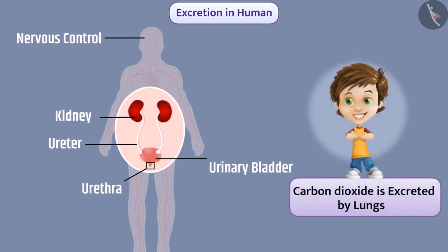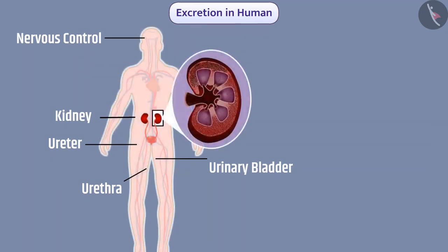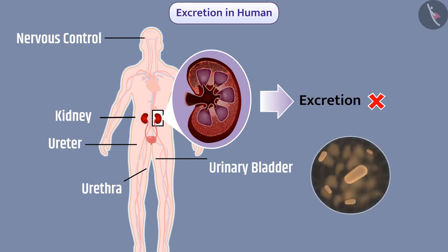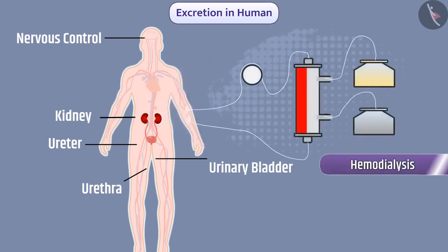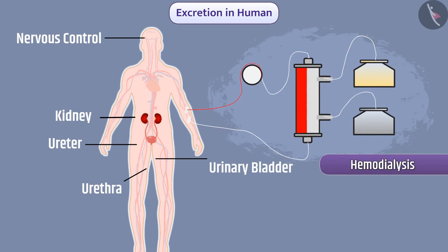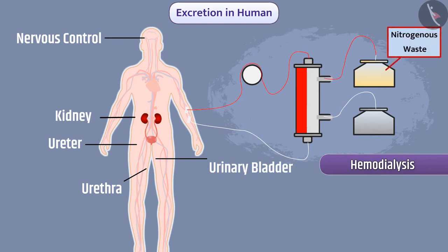Apart from this, carbon dioxide is excreted by the lungs and the skin excretes water and salts. If for any reason the kidneys stop working, excretion in the body does not happen properly and harmful waste starts accumulating in the body, increasing the chance of death. In such cases, hemodialysis is used, in which the blood is filtered with the help of machines and nitrogenous waste is removed from the body. That is why dialysis is called an artificial kidney.